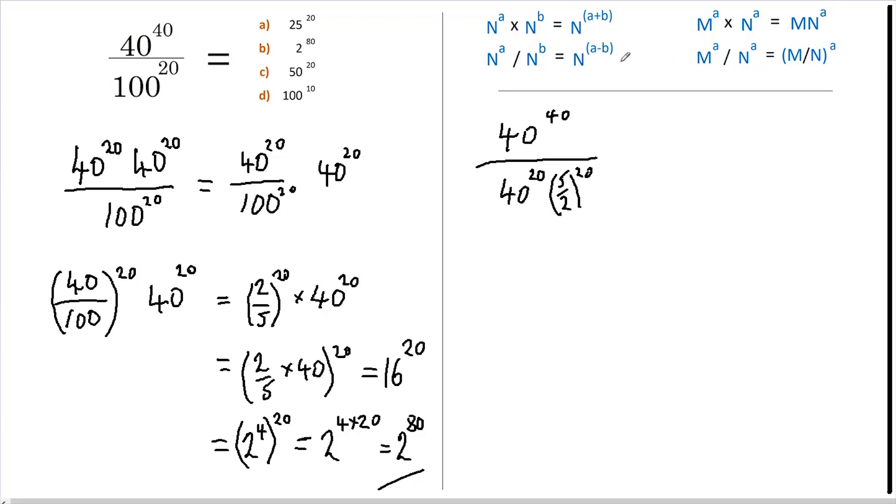We can now use this rule on the 40s to say that 40 to the power of 40 minus 20, all divided by 5 over 2 to the 20. So we end up with 40 to the 20 divided by 5 over 2 to the 20.